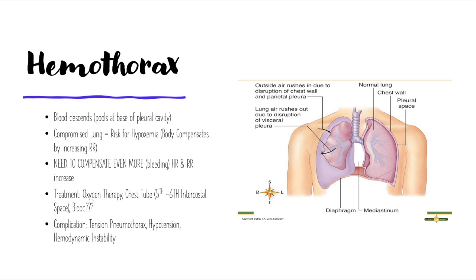Treatment is the same: apply oxygen immediately to maintain oxygenation, and use a chest tube to extract the blood from the cavity. For hemothorax, since blood pools at the base, we place the chest tube lower — usually between the fifth and sixth intercostal space. When using the chest tube, monitor blood pressure carefully; if drainage exceeds 500 to 1500 milliliters (depending on the patient), this can indicate a massive problem and lead to hypotension — the patient is losing too much blood and fluid.